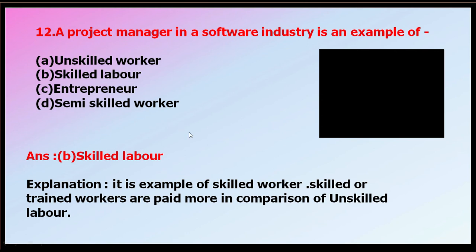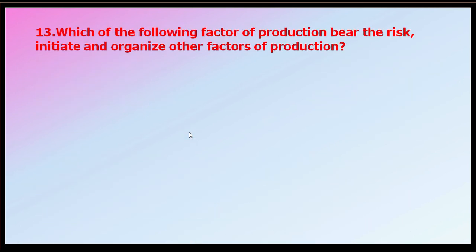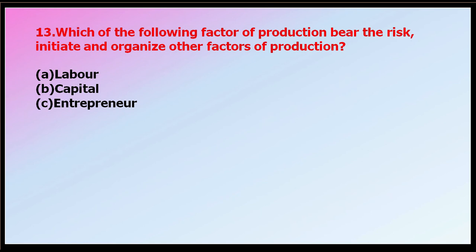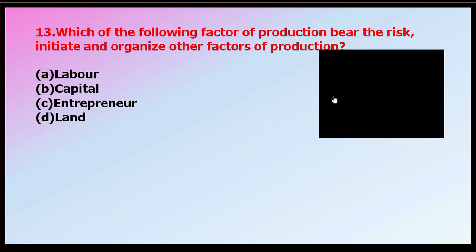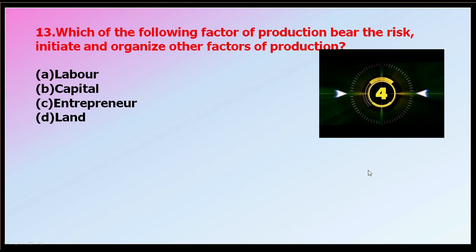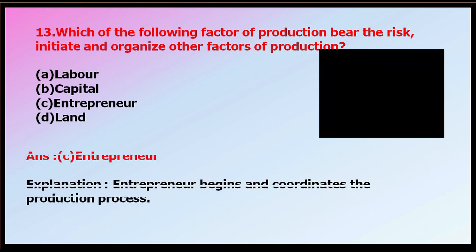Question number thirteen: which factor of production bears the risk, initiates, and organizes other factors of production — like Mark Zuckerberg? Options: labor, capital, entrepreneur, or land. The correct answer is entrepreneur. The entrepreneur begins and coordinates the production process and takes on risk, like Bill Gates who started Microsoft.